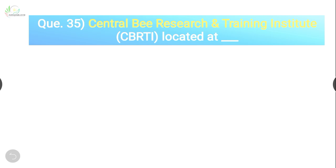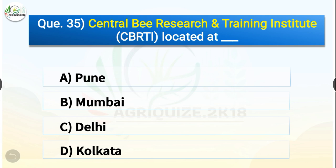Question number thirty-five: Central Bee Research and Training Institute is located at dash. The options are Pune, Mumbai, Delhi, or Kolkata. The correct answer is option A — Pune. Central Bee Research and Training Institute is located at Pune.